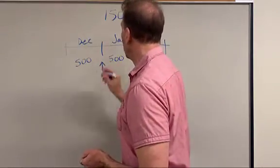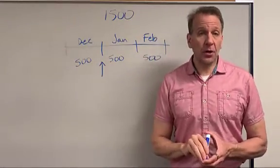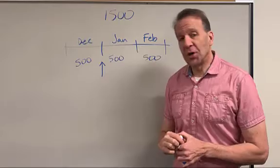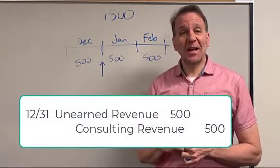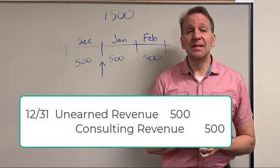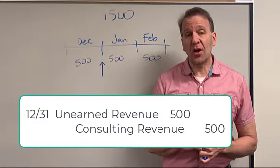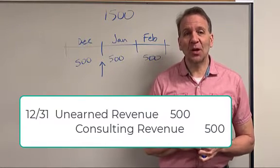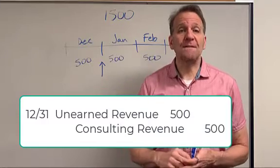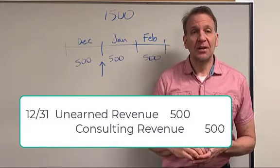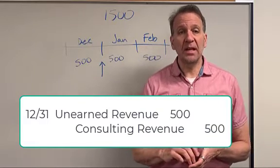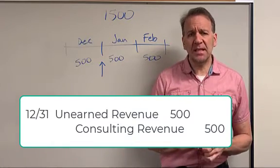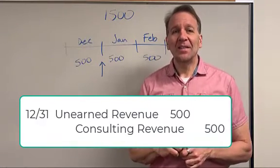Now it's December 31st and we've earned part of that, so our liability should no longer be $1,500. The adjusting journal entry is: we debit unearned revenue $500 and credit consulting revenue $500, because we've earned $500 of it. So now we've reduced our liability and we've increased our revenue.